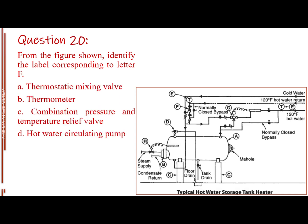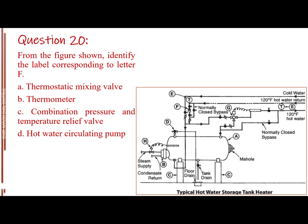Question number 20. From the figure shown, identify the label corresponding to letter F. Letter A, thermostatic mixing valve. Letter B, thermometer. Letter C, combination pressure and temperature relief valve. Letter D, hot water circulating pump. The answer is letter D, hot water circulating pump.